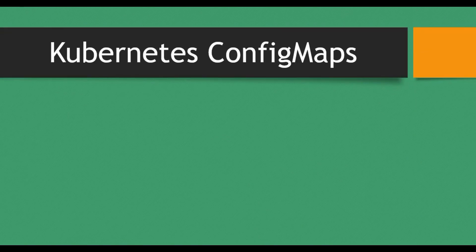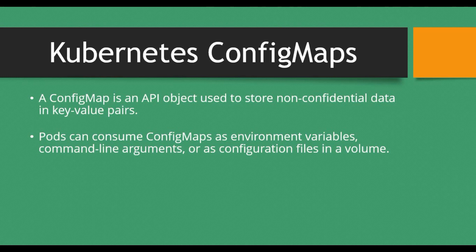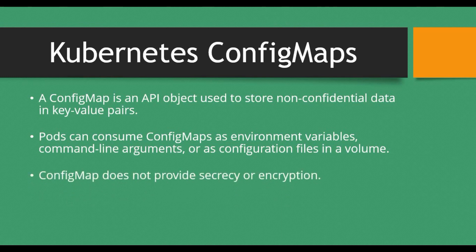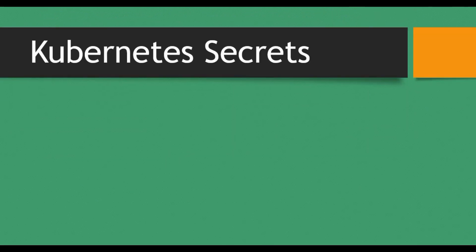Let's start with a quick recap on Kubernetes ConfigMaps. A ConfigMap is an API object used to store non-confidential data in key-value pairs. You can use ConfigMap in a pod via environment variables, command-line arguments, or configuration files and volumes. Importantly, ConfigMap does not provide secrecy or encryption — that's a key difference from Secrets. There is also a data size limitation for ConfigMap.